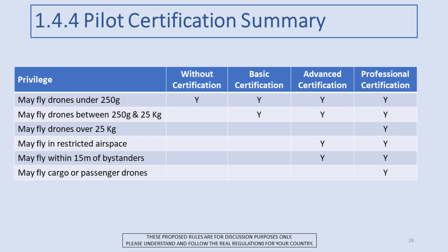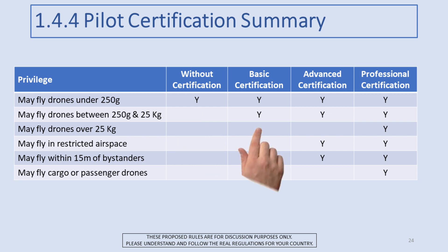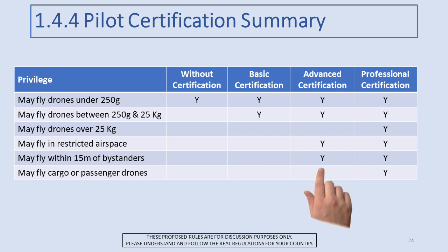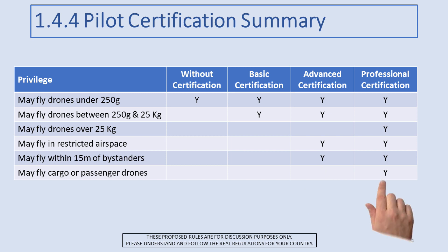I put together a table to summarize this. With no certificate, you can fly drones under 250 grams. With a basic certificate, you can fly drones up to 25 kilos, but cannot fly in restricted airspace or within 15 meters of bystanders. With advanced certification, you can fly up to 25-kilo drones and are now able to fly in restricted airspace or within 15 meters of bystanders under the restrictions I'll cover in subsequent videos. And with professional certification, you can do all of that — and you get a special hat.